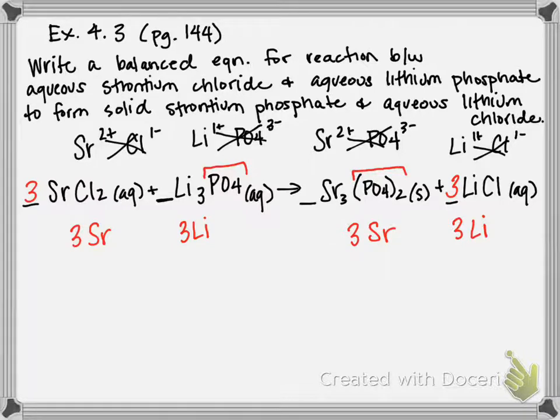I have two. So that means I'm going to put a two in front of my formula containing phosphate on my product side. So now, number of lithiums has changed to six. And I now have two phosphate ions on my reactant side.